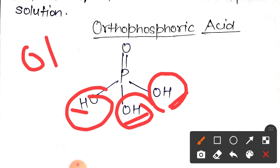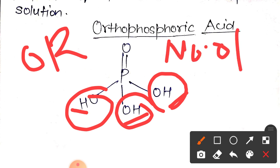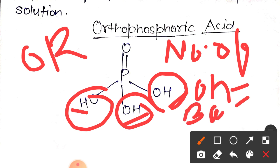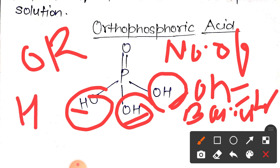Here is a useful trick: the number of OH groups is equal to the basicity. This trick applies specifically in the case of phosphorus acids. In H₃PO₄ there are 3 OH groups, hence the basicity is 3.